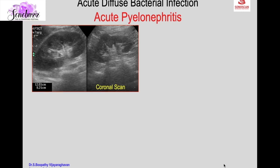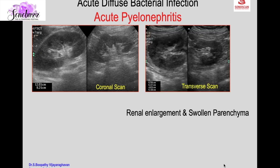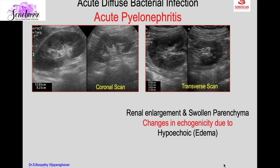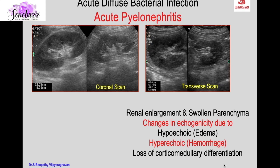This is a coronal scan in a case of right flank pain and fever. The left kidney is normal whereas the right kidney is enlarged. The characteristic feature of acute pyelonephritis is renal enlargement and swollen parenchyma, well appreciated in the transverse scan. Changes in echogenicity of the renal parenchyma may be hypoechoic due to edema or hyperechoic due to associated hemorrhage. There is loss of corticomedullary differentiation and loss of renal sinus fat due to parenchymal edema compressing the central echogenic area.